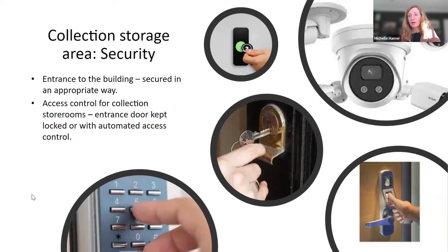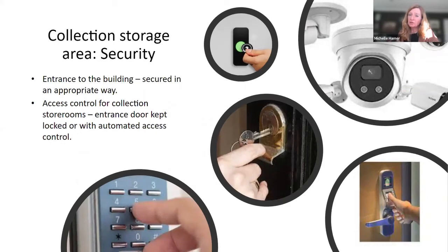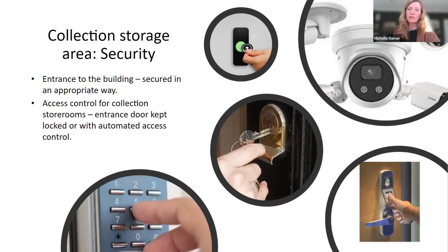Another important issue about the storeroom is security. The entrance to the building — your outer layer of protection — needs to be secured. Access to the actual collection storeroom should have some kind of lock, whether it's a lock and key, a tag, or a fingerprint, and it should be kept locked at all times. More and more people are starting to get CCTV cameras, so security is an issue.